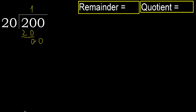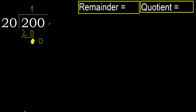Next. Bring down the 0 from this side. 0 is less, therefore next. That digit is not numbered, therefore finished.